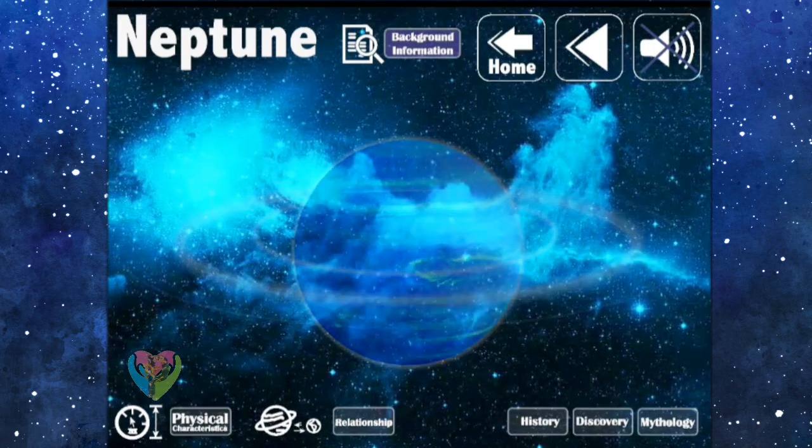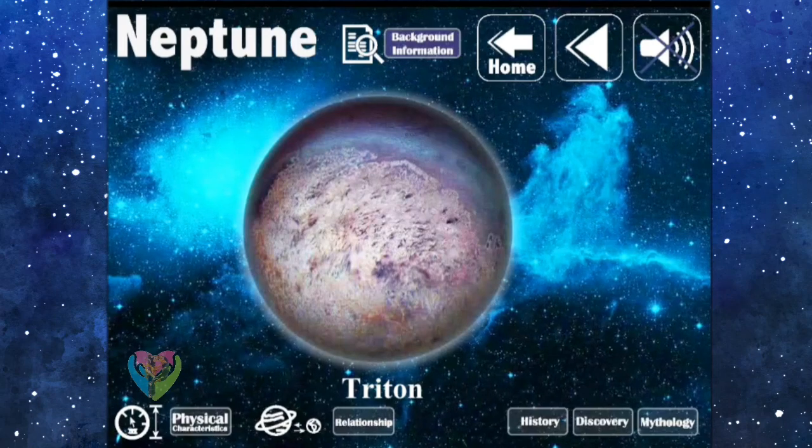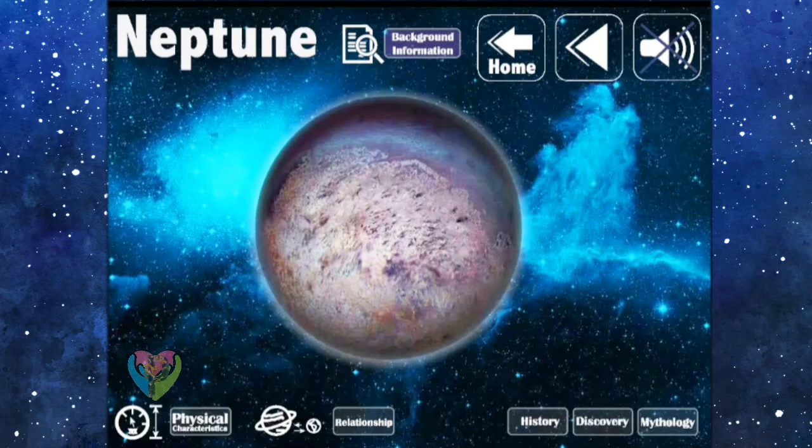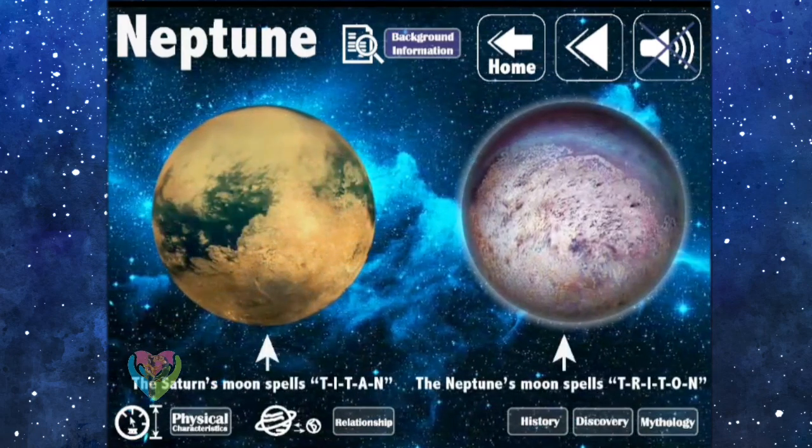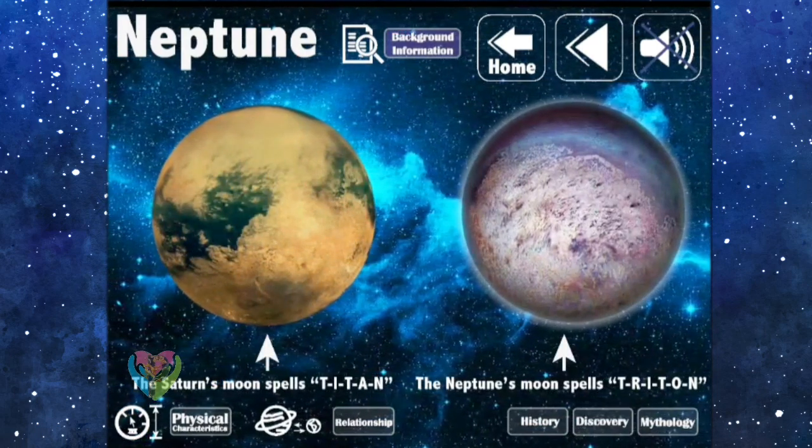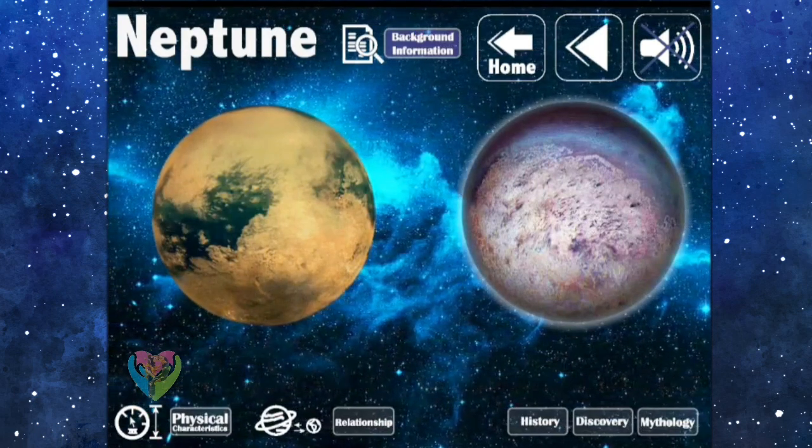Neptune has a total of 13 natural satellites. The biggest moon is Triton, which pronunciation in English is similar to Saturn's moon. Triton, Saturn's moon, is spelled T-I-T-A-N. Neptune's moon is spelled T-R-I-T-O-N.